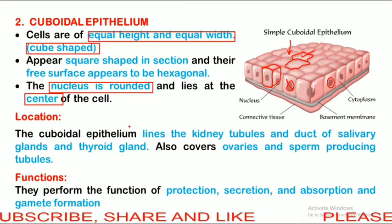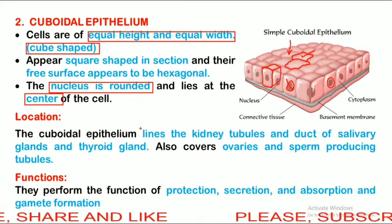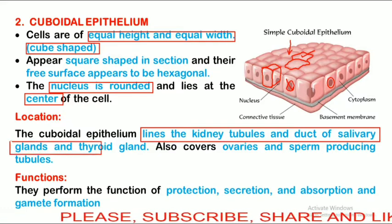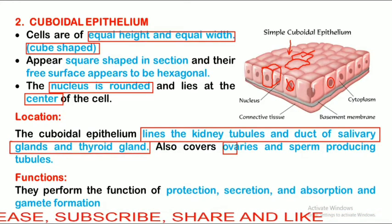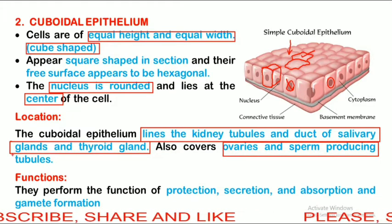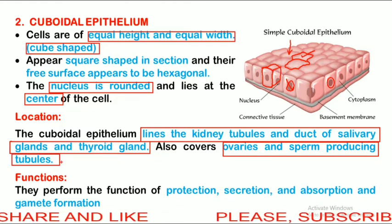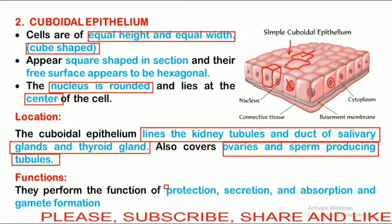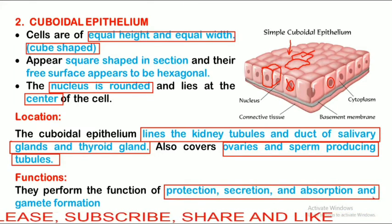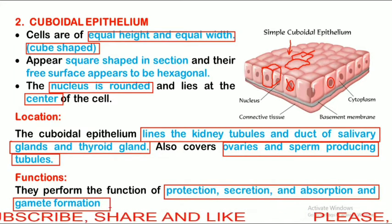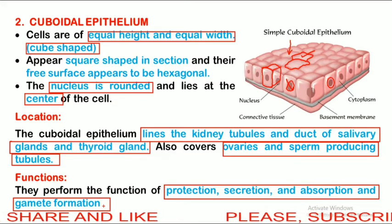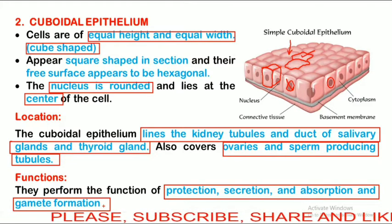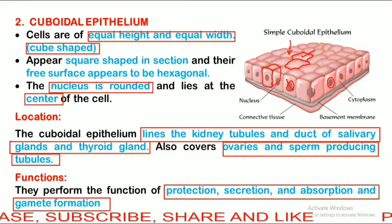Cuboidal epithelium lines the kidney tubules, ducts of the salivary gland and thyroid gland. It also covers the ovaries, sperm-producing tubules and the fallopian tube. Their functions are protection, secretion, absorption and gamete formation. They are modified to form germinal epithelium, which further develops to form gametes. They are also tightly and very closely fitted.